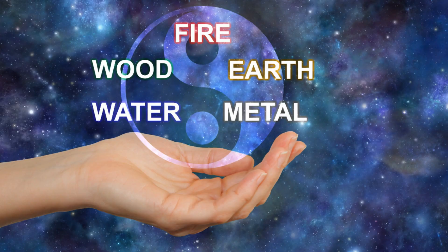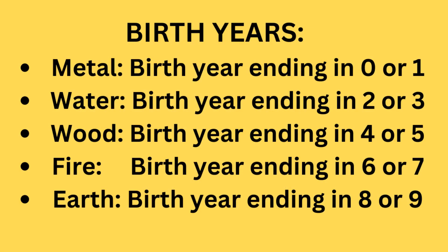Now let's see how you can determine what your element is. Your Chinese zodiac element is really easy to figure out — just look at the last digit of your birth year. Metal: birth year ending in 0 or 1. Water: ending in 2 or 3. Wood: ending in 4 or 5. Fire: ending in 6 or 7. Earth: ending in 8 or 9.